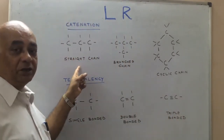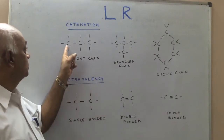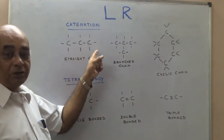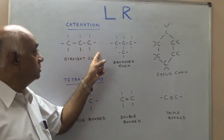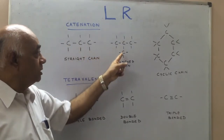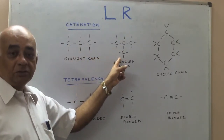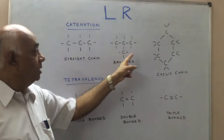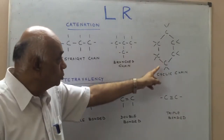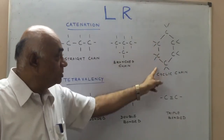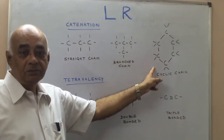This is a straight chain — a carbon atom straight chain — a branched chain, and a closed or cyclic chain.